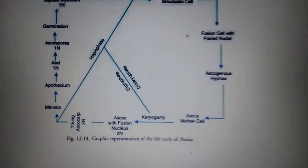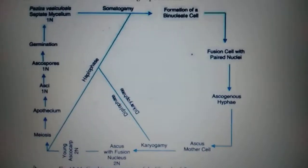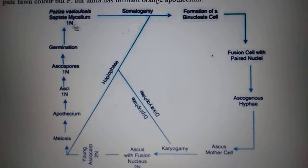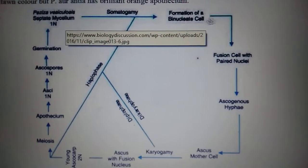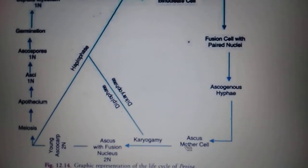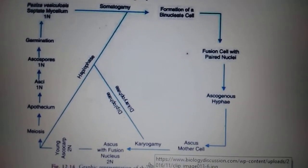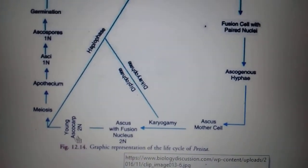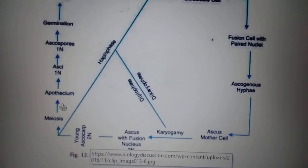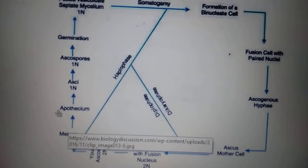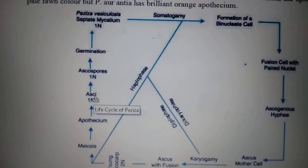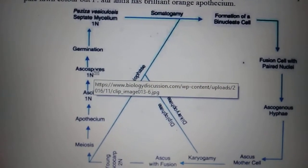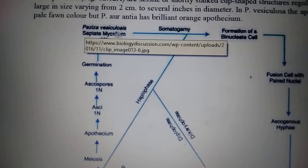This is the life cycle of Peziza. Starting from the septate mycelium (1N haploid), somatogamy occurs leading to formation of a binucleate cell. Then the fusion cell with paired nuclei forms ascogenous hyphae, then the ascus mother cell — all this is the dikaryotic phase. Then karyogamy occurs — this is the diploid phase. The ascus with fusion nucleus is diploid. Then meiosis occurs, the haploid phase begins, and an apothecium is formed having asci that are haploid with ascospores, which germinate to form the vegetative mycelium.